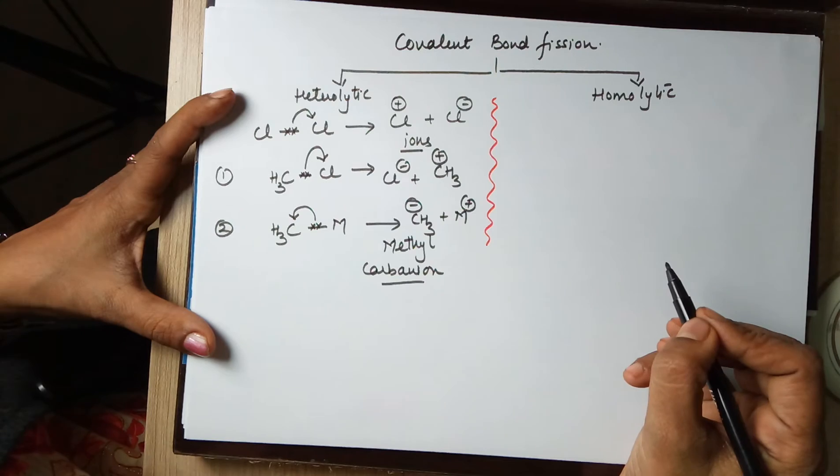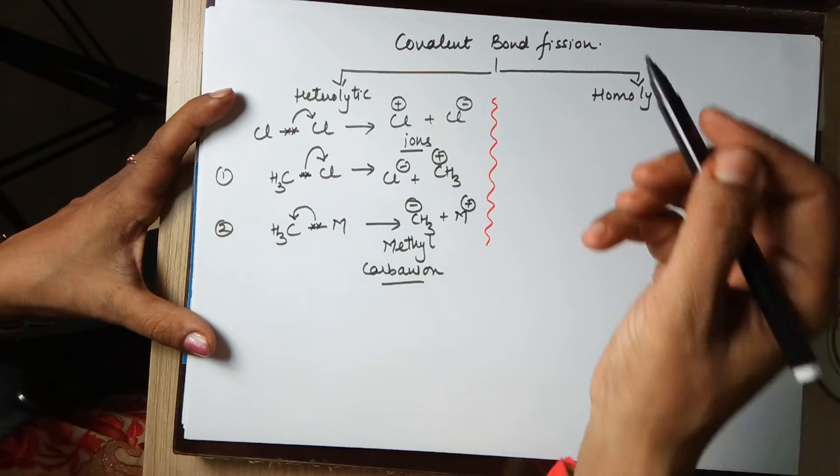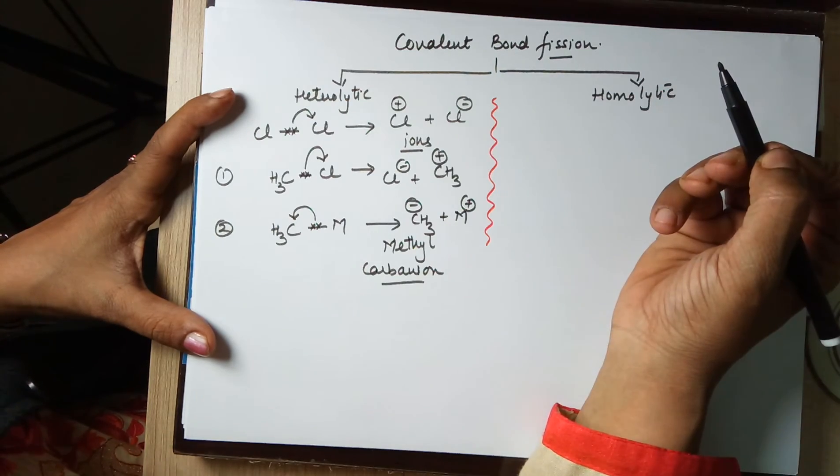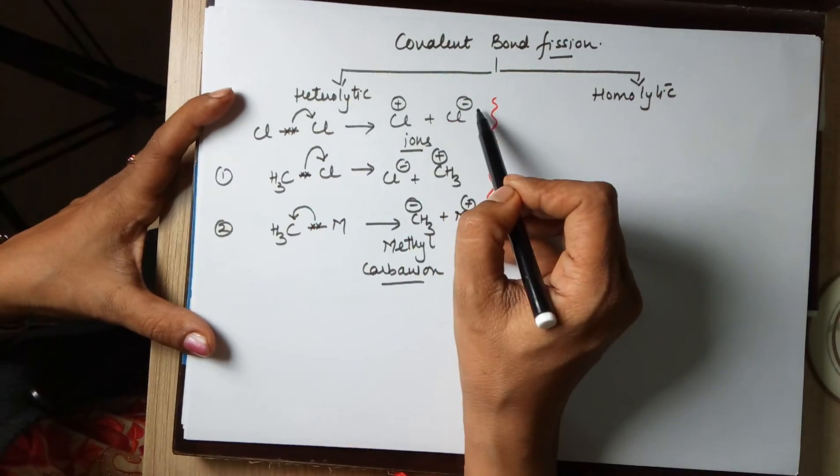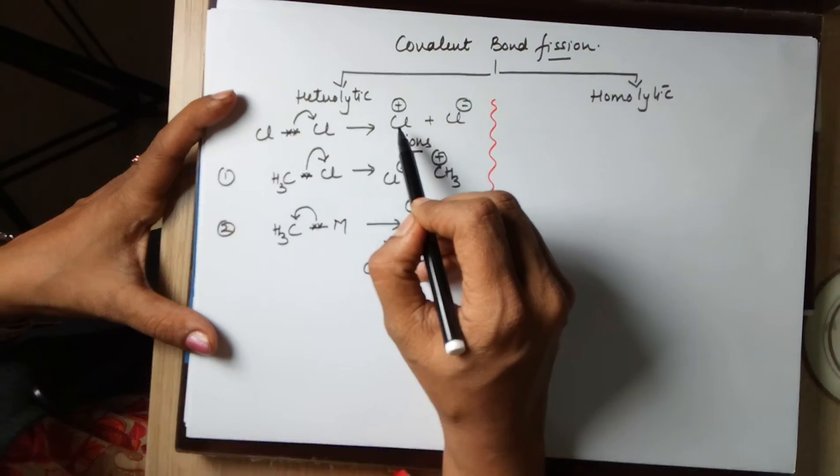So the conclusion is the distribution of electrons after the bond fission goes towards one of the two atoms leading to a negative and a positively charged species.